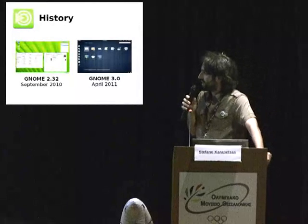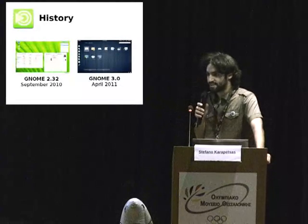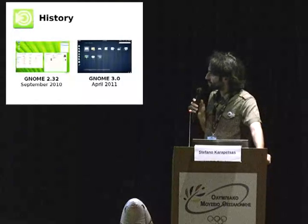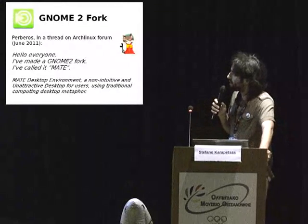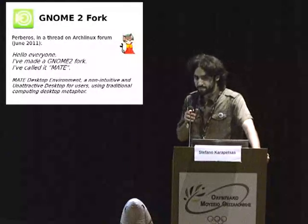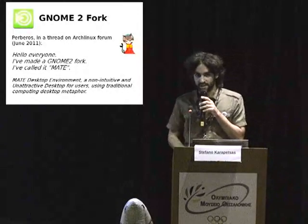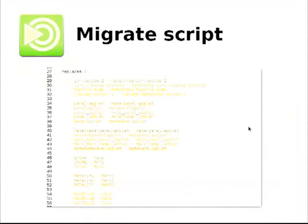The history of MATE starts with the transition from GNOME 2 to GNOME 3. GNOME 3 is a nice desktop environment, but it's an innovation and it's very different from what GNOME 2 was. When GNOME 3 came out, Perbaros, an Argentinian Linux user, started the fork, migrating every GNOME 2 package. This was a big mistake because the GNOME 2 base was very large, so there were a lot of packages in the first release of MATE, and the migration script was just a simple replace of words.